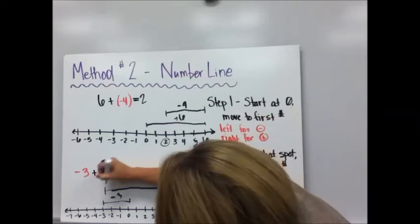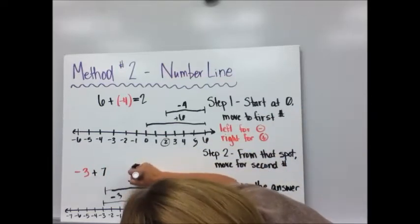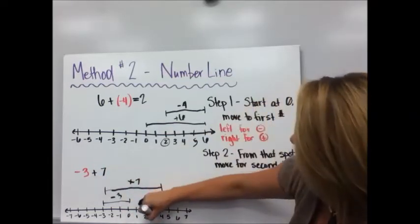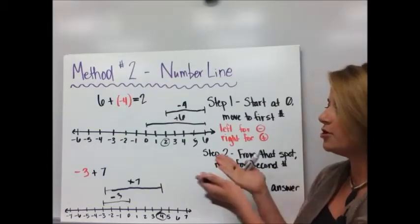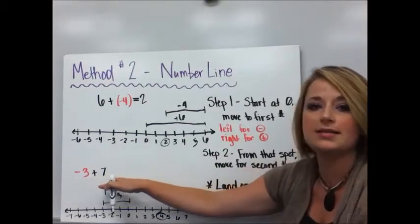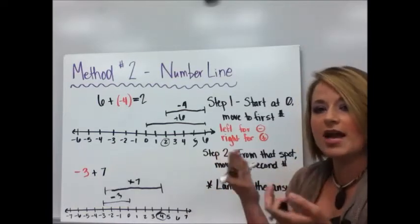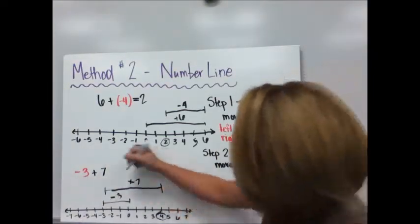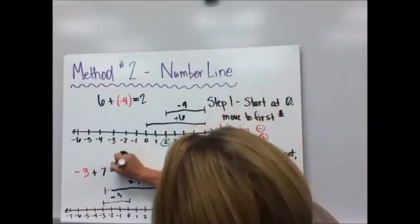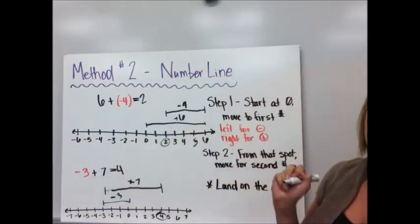Which landed on positive four. And if you think back to our counters example, picture if you had three negative counters and seven positive ones. You're going to have three sets of zero pairs. There's more positives than negatives. So that makes sense that my answer is positive four.